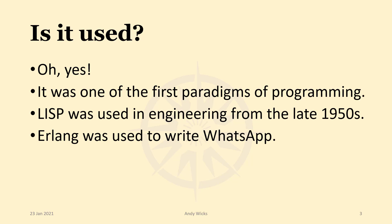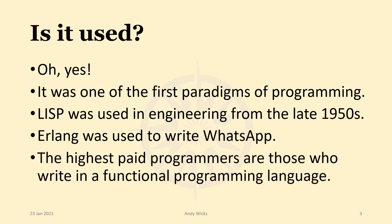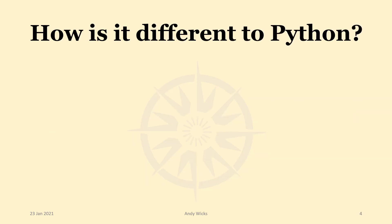So it's a very current, very modern language. However, the thing that might interest you is that the highest paid programmers are those who write in a functional programming language. But so far, you've done imperative languages such as Python. So how is Python different to the functional programming languages?